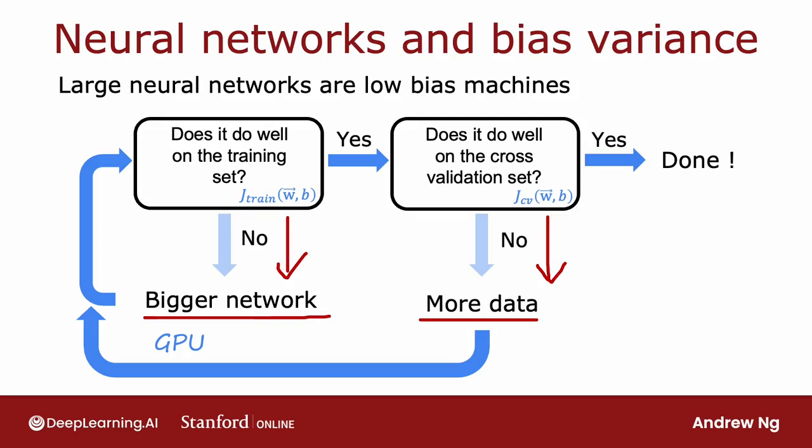One thing that was implicit in this slide that may not have been obvious is that as you're developing a learning algorithm, sometimes you find that you have high bias, in which case you do things like increase the neural network, but then after you increase the neural network, you may find that you have high variance, in which case you might do other things like collect more data. And during the hours or days or weeks you're developing a machine learning algorithm, at different points you may have high bias or high variance, and it can change. But depending on whether your algorithm has high bias or high variance at that time can help give guidance for what you should be trying next.